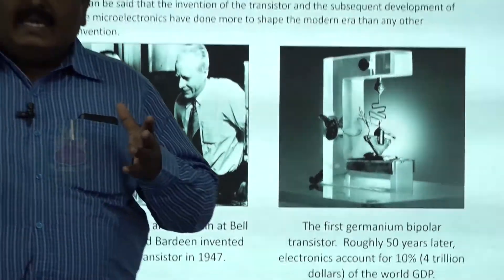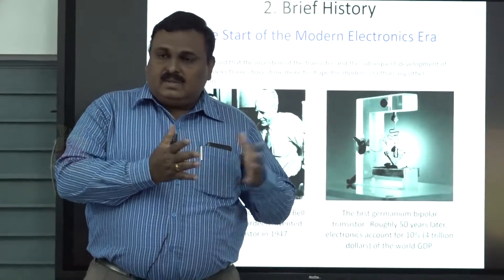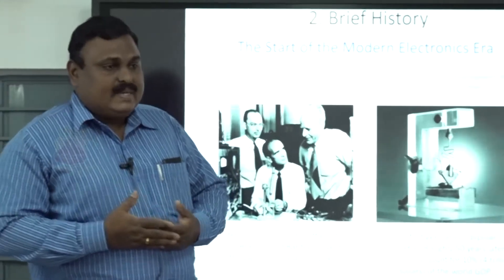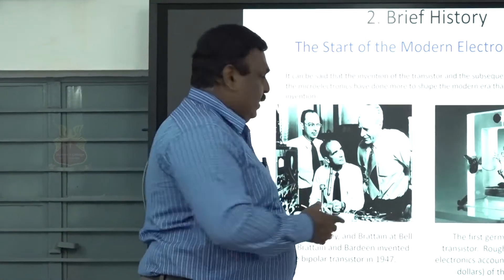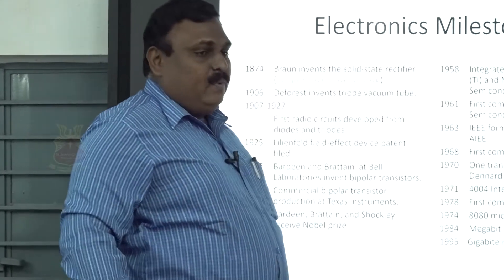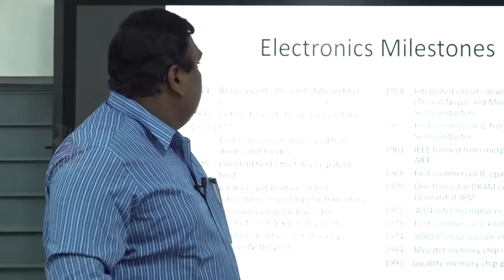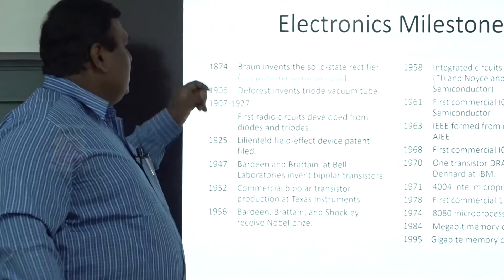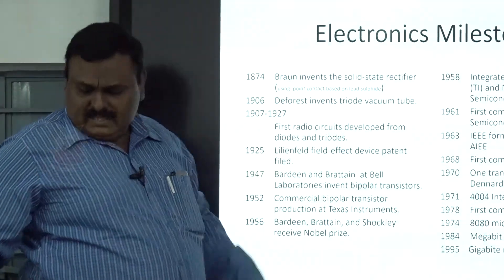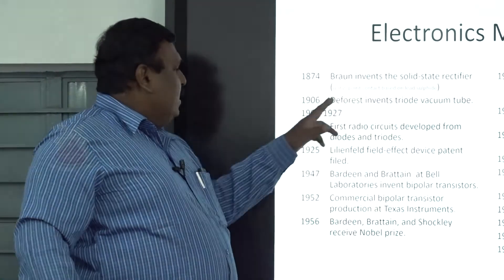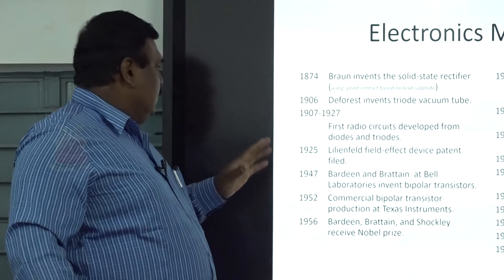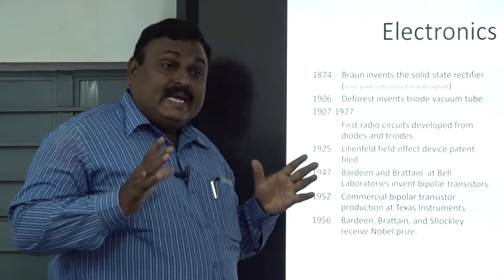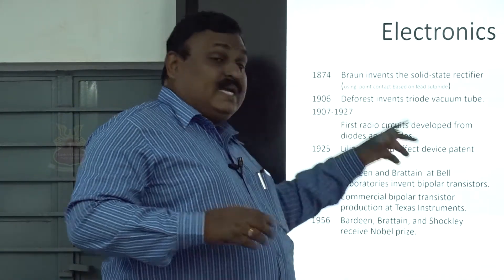After the era of vacuum tubes, semiconductive materials were widely developed. The semiconductive materials are Silicon and Germanium. Let us see the milestones of electronics. In the 18th century, the first solid-state rectifier was invented. After that, a triode vacuum tube was invented in the year 1906. In the period from 1907 to 1927, the radio circuit was widely developed using the diodes and triodes.